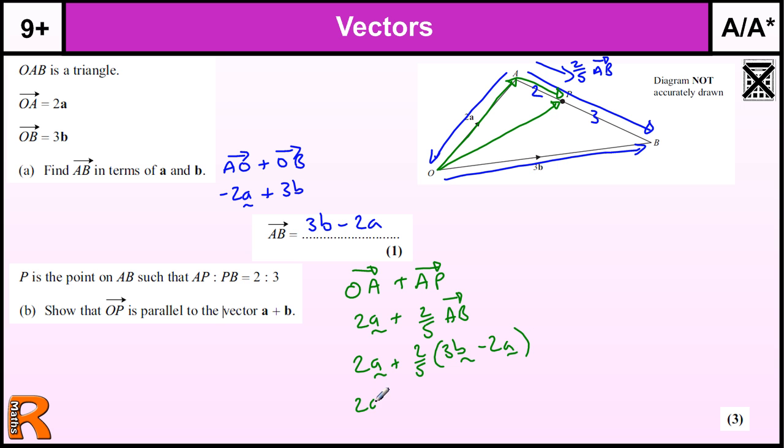So we've got 2a plus 2 fifths of 3b. Well, 2 times 3 is 6 divided by 5, so that's 6 fifths of b, or 1 and 1 fifth of b. And we're taking away 2 times 2 is 4 fifths of a. So we just need to combine those two. So we've got 2a minus 4 fifths of a, so that's 1 and 1 fifth of a, or we could write it as 6 fifths of a.